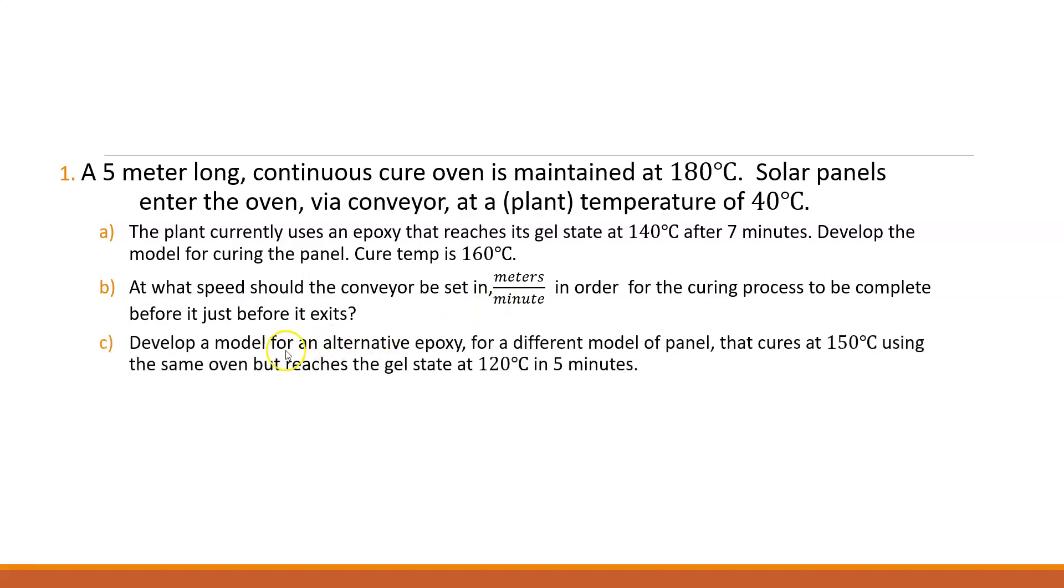So those are the first two problems. The next one, C, develop a model for an alternative epoxy for a different model of panel. And this one cures at 150 degrees C, using the exact same oven setting. So 180 degrees, starting to enter at 40 degrees. The same oven that reaches the gel state at 120 degrees. So a lower gel state in less than five minutes. But it finally reaches its cure at 150. And again, remember, the environment it's going into is 180. The environment that it's leaving, that it was normalized at, is 40. And the last question, what's the new conveyor speed required when using this new epoxy? So you've got four questions.